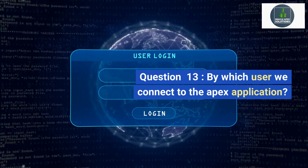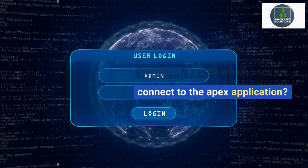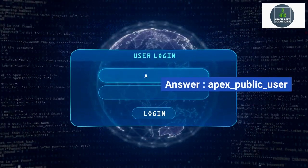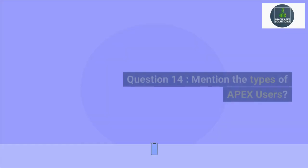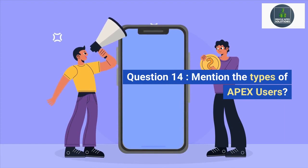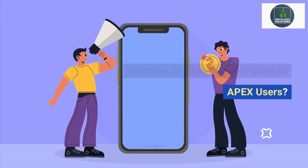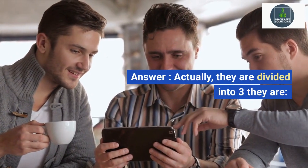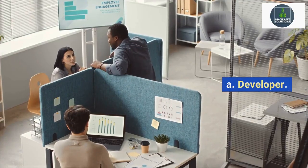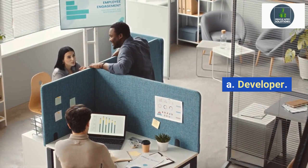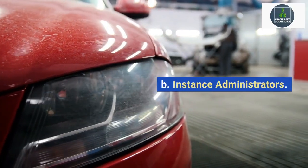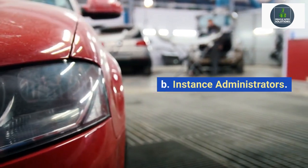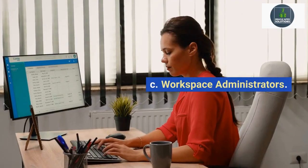Question 13: By which user do we connect to the APEX application? Answer: APEX_PUBLIC_USER. Question 14: Mention the types of APEX users. Answer: They are divided into three types: A. Developer, B. Instance Administrators, C. Workspace Administrators.